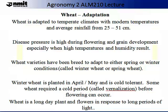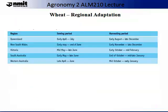Winter wheat is planted in April-May and is cold tolerant. Some wheat requires a cold period called vernalisation before flowering can occur. Wheat is what we call a long day plant, meaning it flowers in response to long periods of light. The table on the slide is a summary of regional adaptation from sowing period to harvest period, broken down state by state. As you can see, Queensland has a very different sowing period to Western Australia, reflecting the climatic and growing conditions of each of those regions.